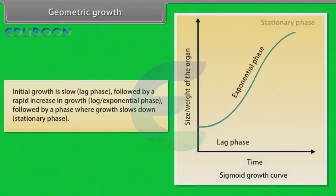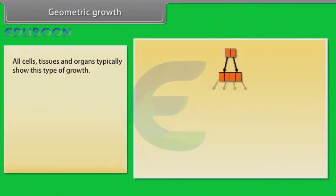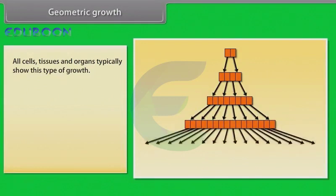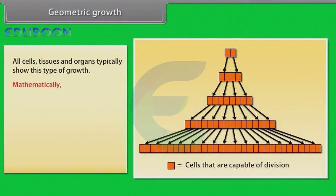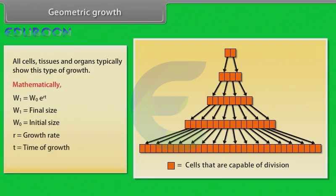Geometric growth: Initial growth is slow, followed by a rapid increase in growth, followed by a phase where growth slows down. All cells, tissues and organs typically show this type of growth. Mathematically, W1 = W0 × e^(Rt), where W1 is final size, W0 is initial size, R is growth rate, T is time of growth, and e is the base of natural logarithms.